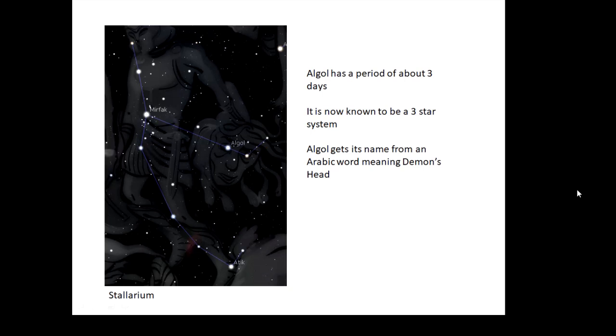A very famous binary, although now we know it's actually three stars, is Algol. It's very easy to find in Perseus, and it has a period of about three days. Algol gets its name from an Arabic word meaning demon's head. Algol in Perseus is actually the eye of Medusa.